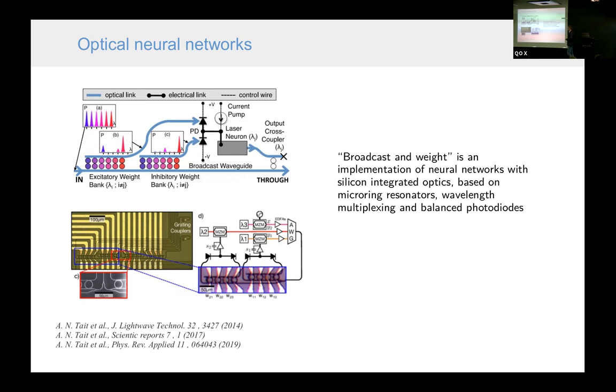To show you some examples of integrated optical devices, I will show some recent experiments. In this series of papers, these researchers developed a system that is called broadcast and weight, which is a realization of neural networks based on ring resonators that provide weighting of the optical signal, and photodiodes that can receive optical signal and translate it to electrical signal, both with positive and negative weight. This is like a hybrid electronic optical device, and one can build simple neural networks using this kind of systems.